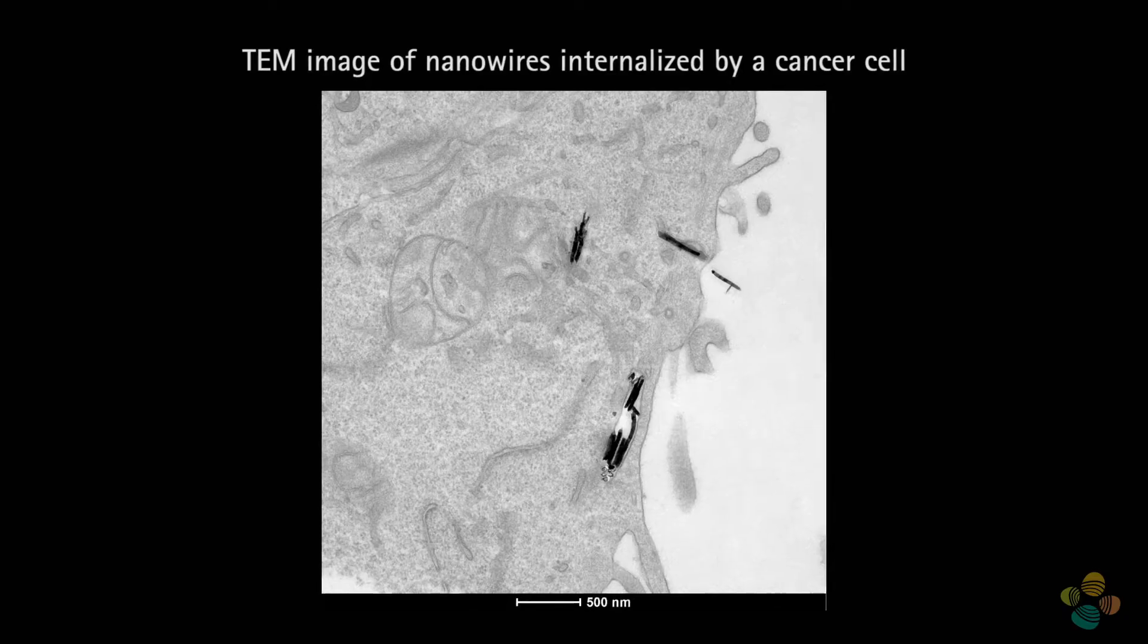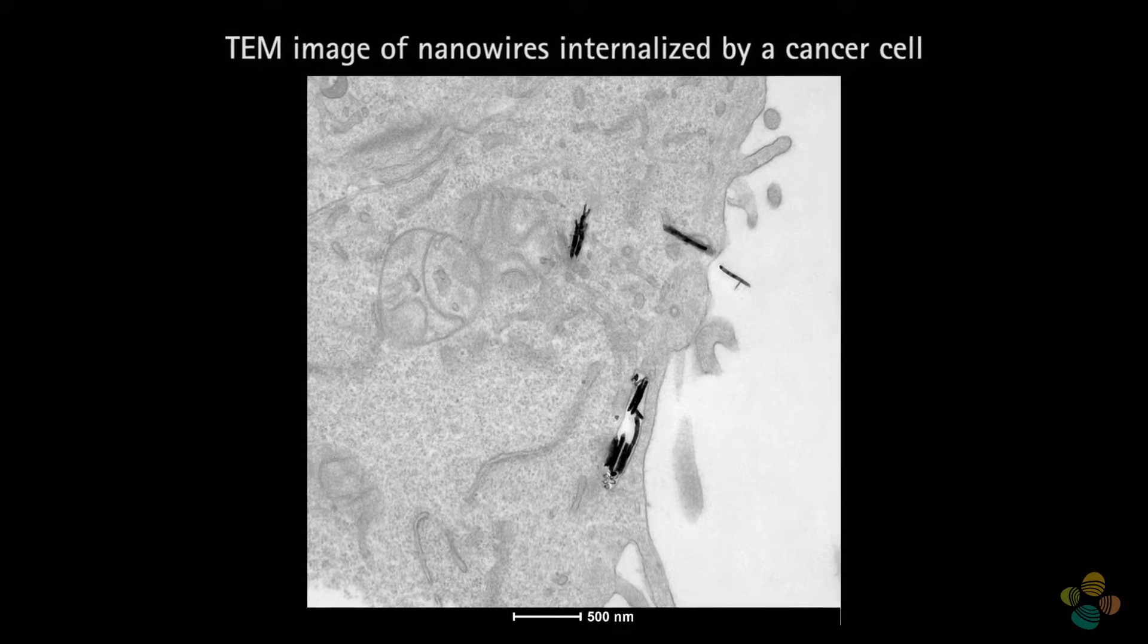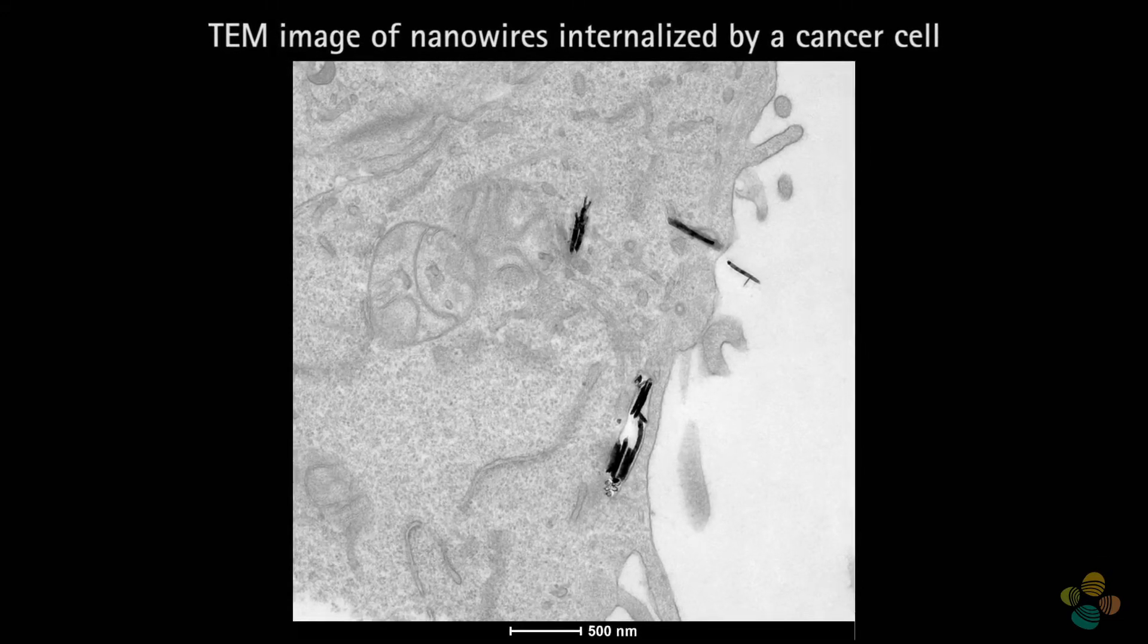From this project three master theses in our lab have been produced studying different interactions between nanowires and either cancer cells or non-cancer cells. The most recent master thesis is about how the cancer cells internalize magnetic nanowires. As you can see there's much to be done because the field is very interesting and there's so much we still don't know.